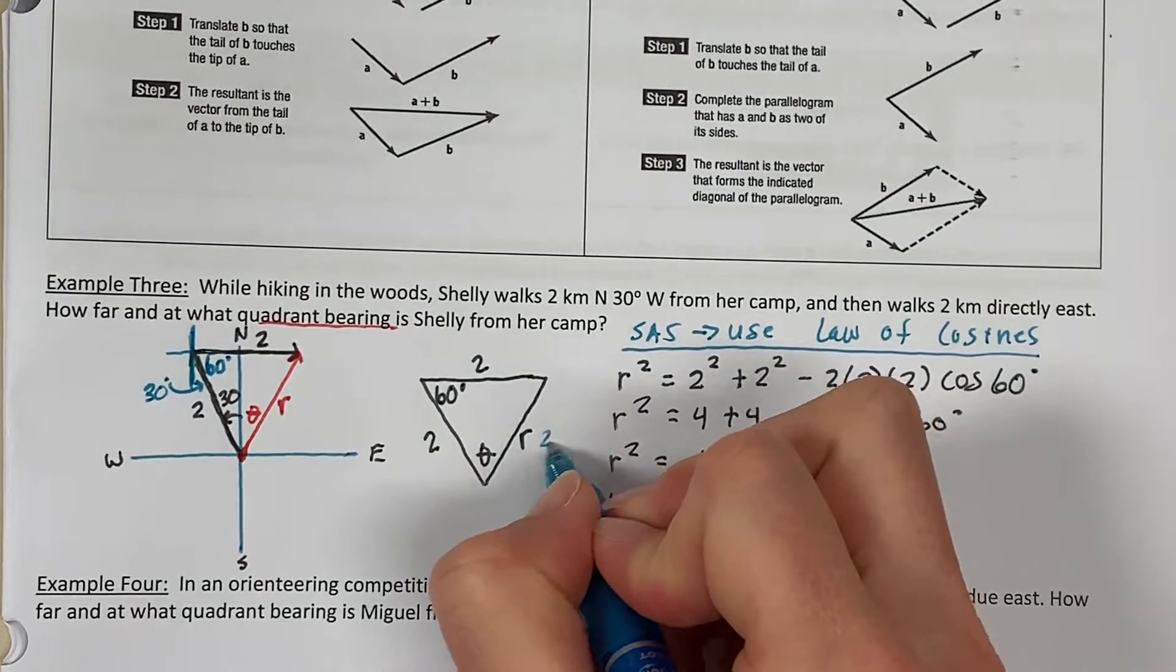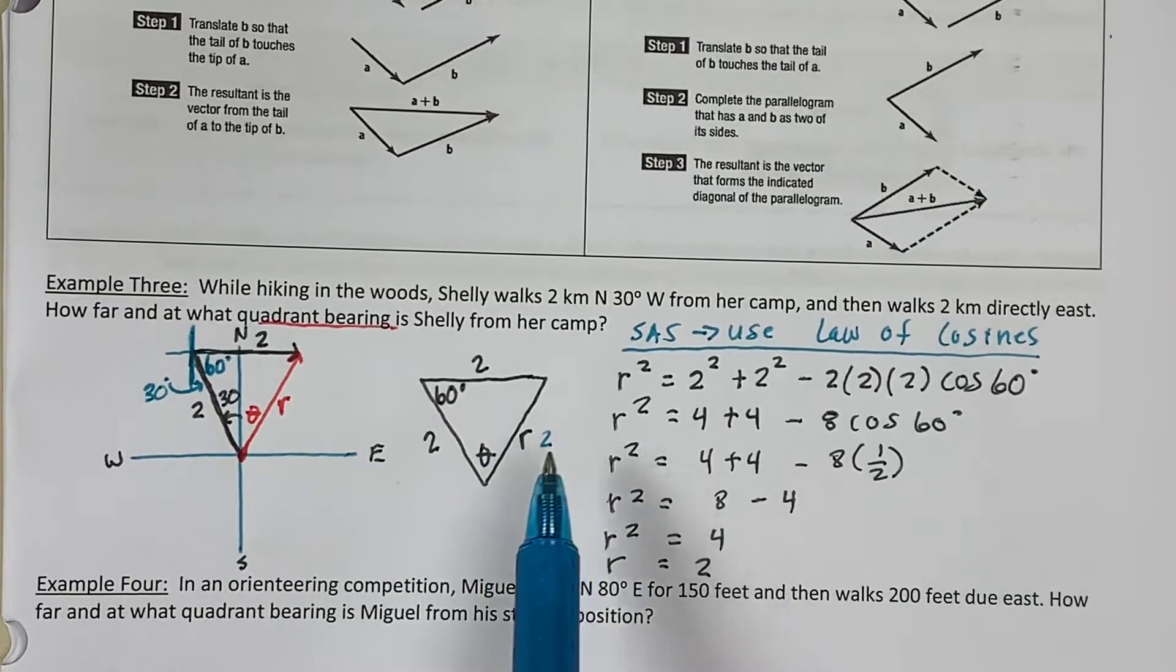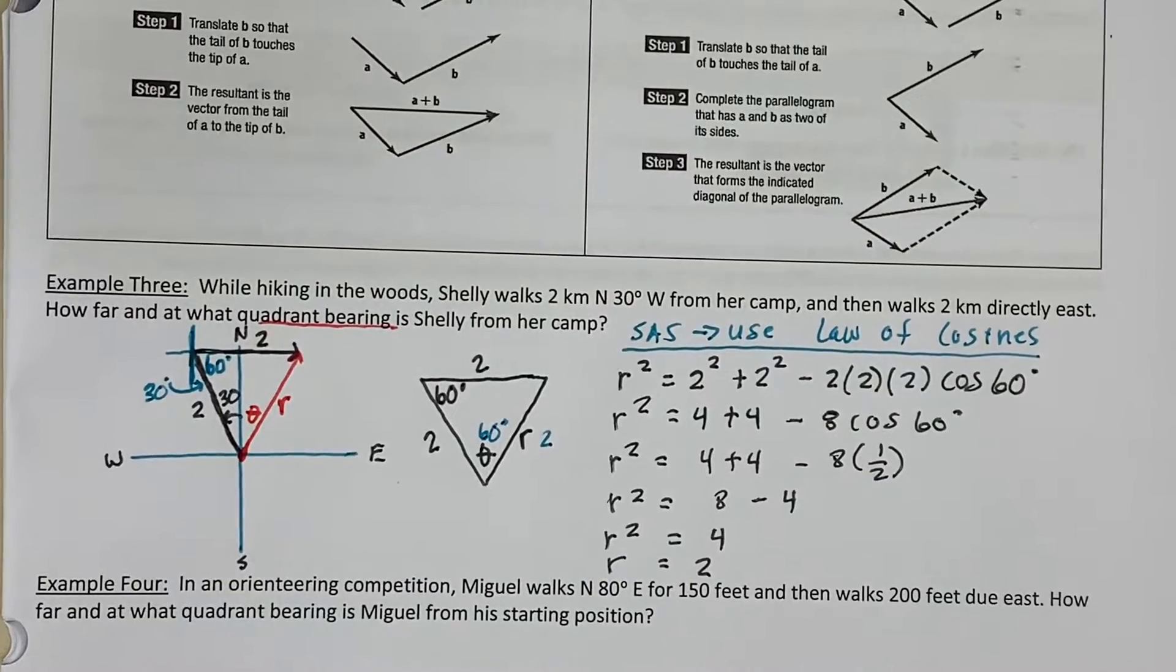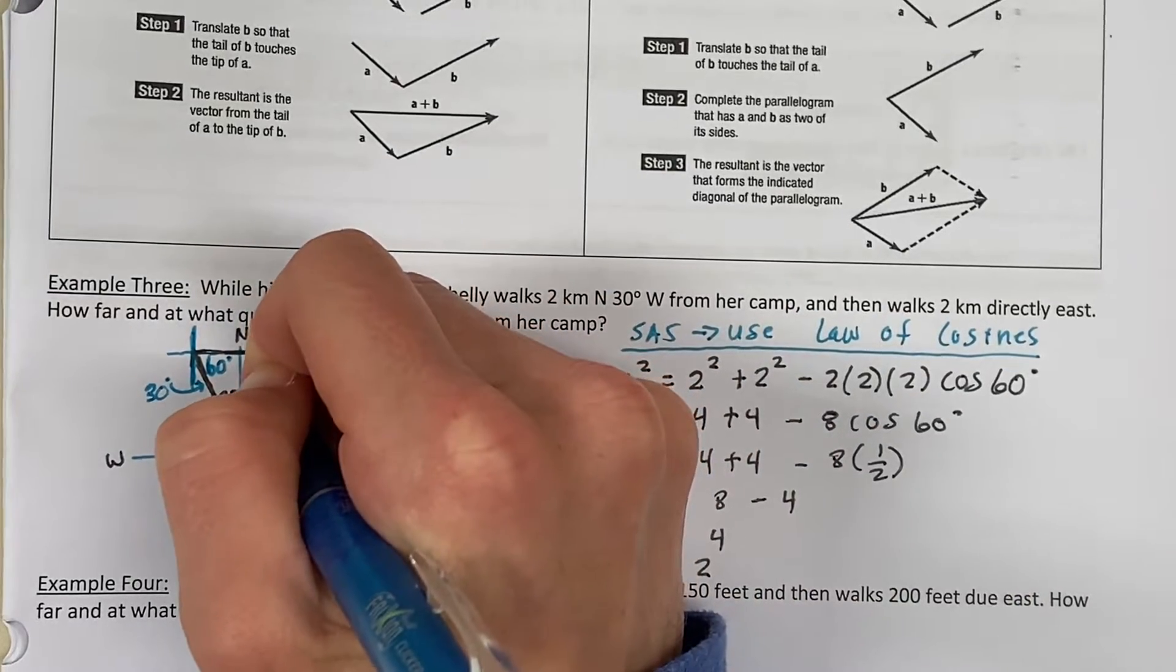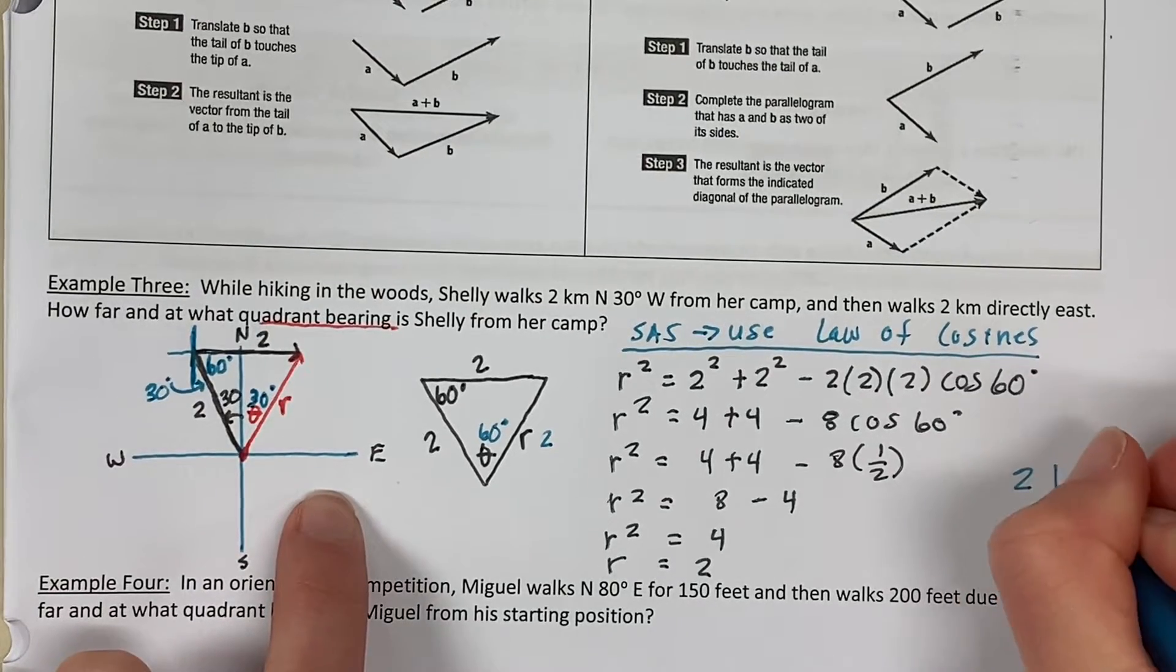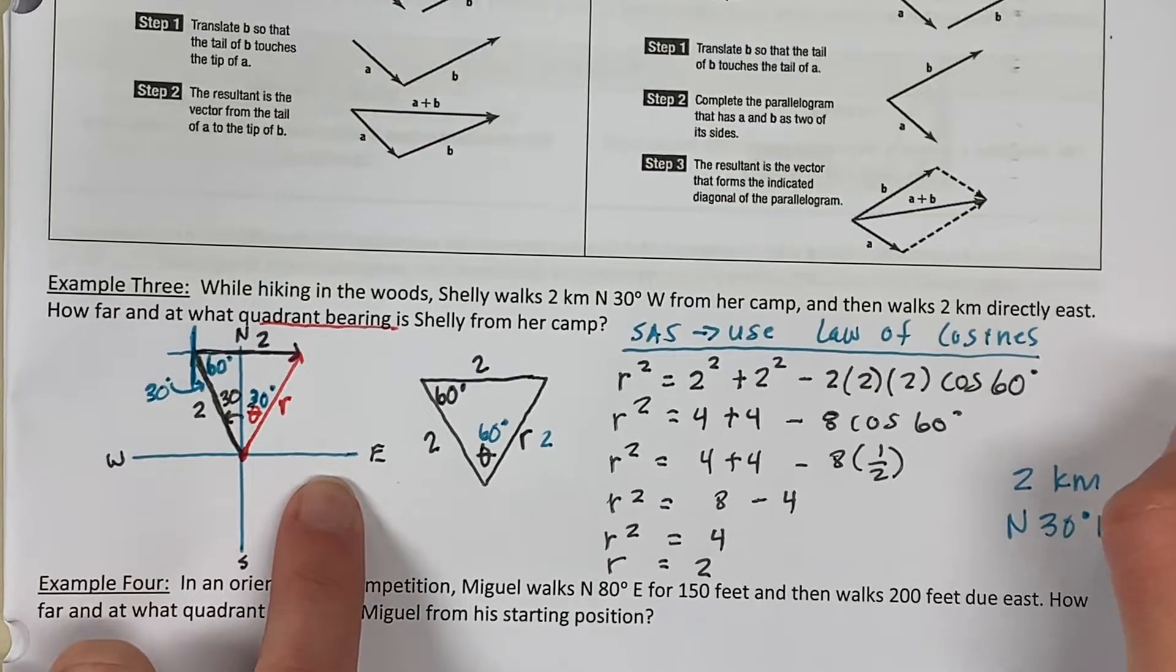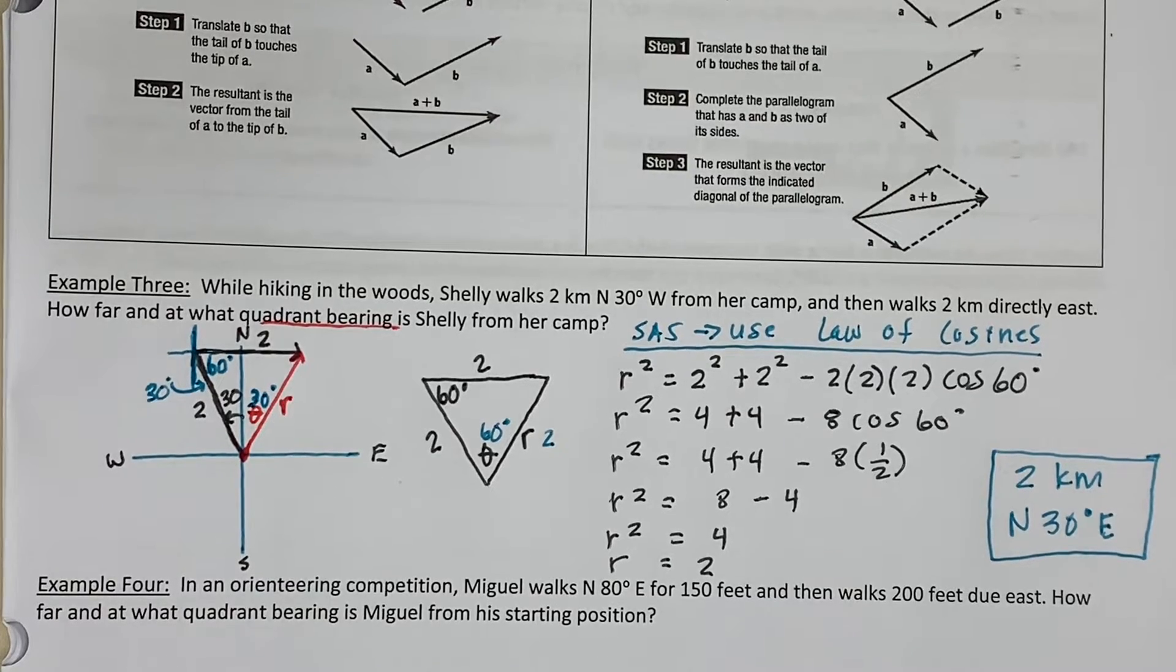So, if R is 2, actually, I have an equilateral triangle. So, if all sides are equal, then we know all angles are equal. 180 divided by 3 would make this angle of theta 60 degrees. Now, if this whole angle is 60 degrees, then what's inside right here has to be 30 degrees. So, here is what I know. She is 2 kilometers from camp at a bearing north 30 degrees east. And this is her direction and distance from camp.